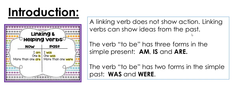Linking verbs can show ideas from the past. The verb 'to be' has three forms in the simple present. In the present it's used as am, is, and are. If you want to show ideas from the past we use was and were. So in the present we use am, is, or are, and in the past we use was and were.